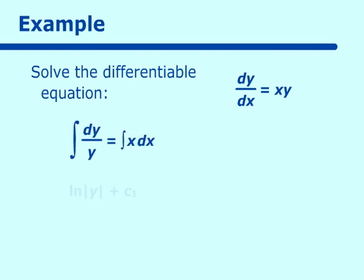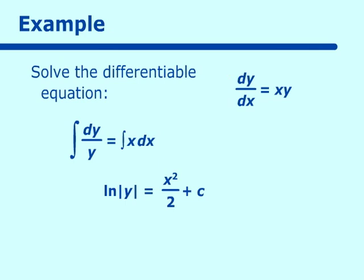We get ln|y| plus some constant c1. Taking the antiderivative of x gives x²/2 plus another constant. When working with differential equations, we take both constants and combine them into one on the right-hand side. So we have ln|y| = x²/2 + c. This needs to be finished so we can solve for y.